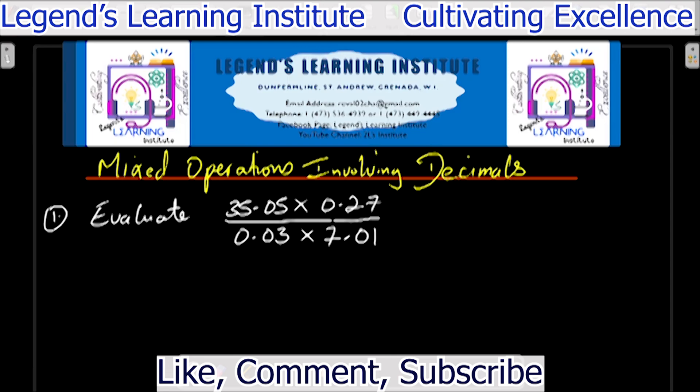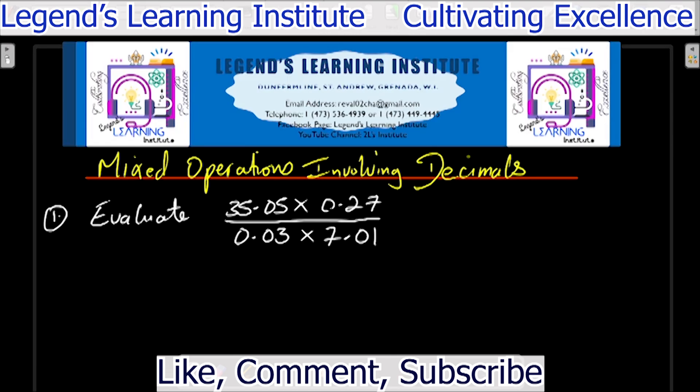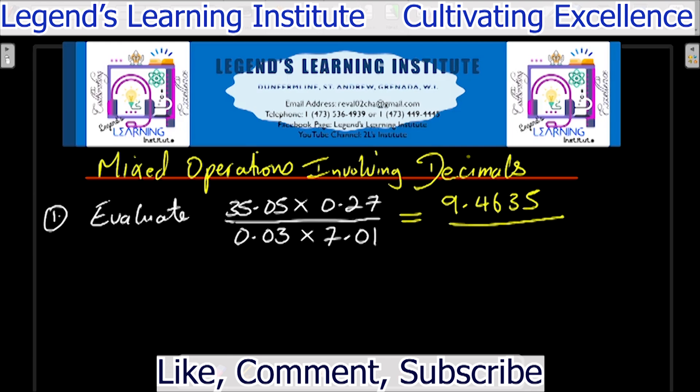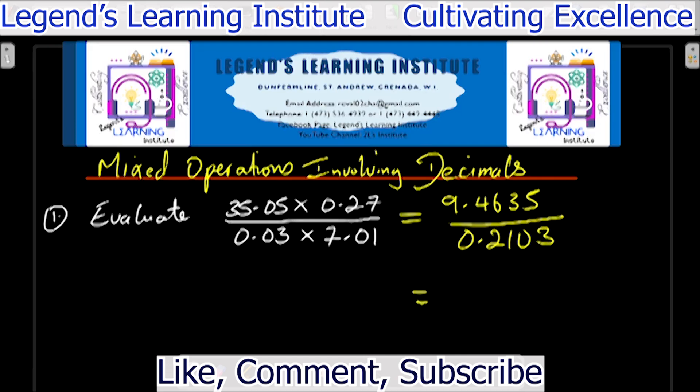The first thing you want to do is to simplify the numerator. In the calculator we see 35.05 times 0.27 that would give us 9.4635. So we get 9.4635 over 0.03 times 7.01 and that would give us 0.2103. The next step is to divide. So we say 9.4635 divided by 0.2103 that would give us 45.